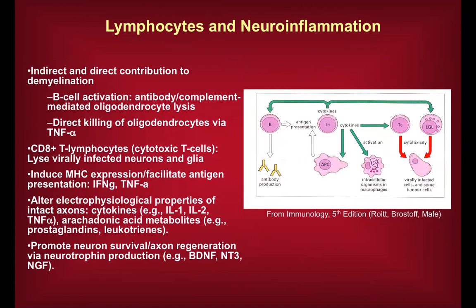Lymphocytes have both direct and indirect pathology in many demyelinating conditions. Self-reactive antibodies can form, T cell cytokines can disrupt oligodendrocytes, and CD8 cytotoxic lymphocytes can kill neurons and glia — highly relevant in CNS infections.